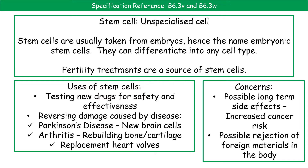In terms of what we use stem cells for: first, we can test new drugs for safety and effectiveness, which avoids having to use animals or humans at that point — we can test it on human cells and see what effect it has. Secondly, we can actually use them to reverse damage caused by certain diseases, such as developing new brain cells for those suffering with Parkinson's disease or growing replacement heart valves.